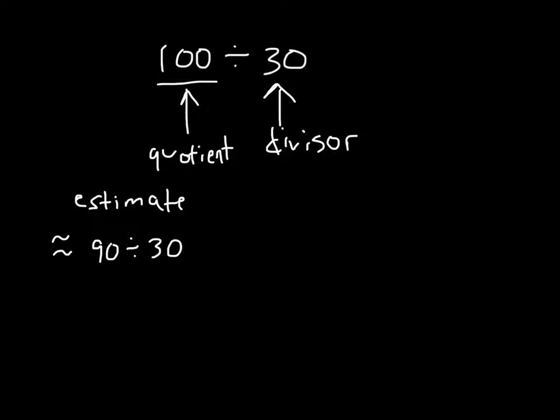We should be thinking of our basic fact of 9 divided by 3. 90 divided by 30 is 3. We can use this estimate to help us solve the problem and to check it.